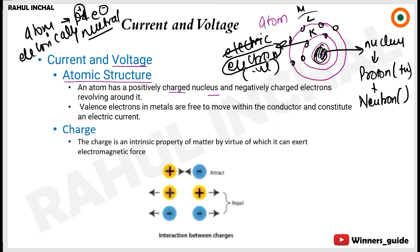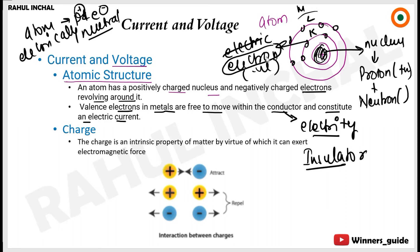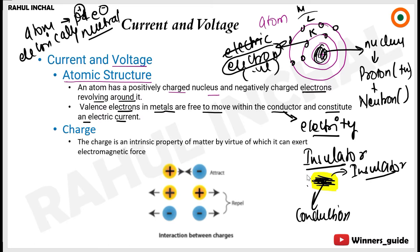Valence electrons in metals are free to move within the conductor and constitute an electric current. A conductor is a substance which gives the path for electric charges to flow. An insulator stops the conduction. Just like any wire you've seen — the outer colorful covering is the insulator, and the inner black wire is the conductor through which charges flow. The outer covering is the insulator so that anyone who touches it doesn't get a shock.